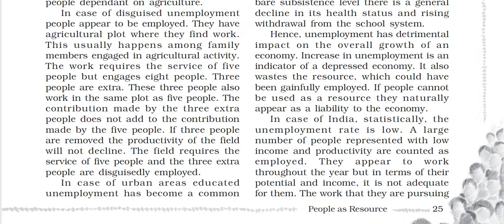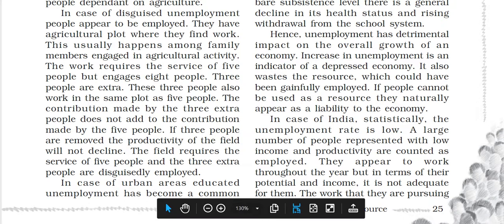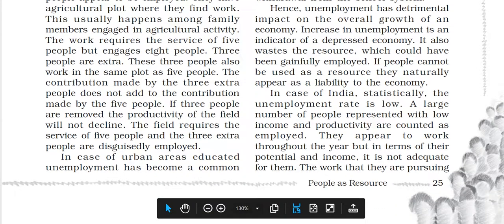The contributions of these three extra people are not adding any value — the field's productivity is the same as if only five people worked. If these three people are removed from the field, the productivity will not decline or decrease. The three extra people are disguisedly employed. This is what disguised unemployment means.